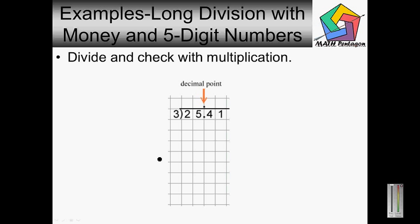Let's do a few examples on long division with money and five digit numbers. Divide and check with multiplication. You can see in this problem we have a decimal point, so all you got to do is line it up and it's set up ready for you. Let's do the division problem.